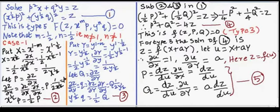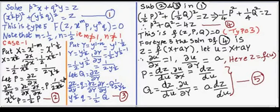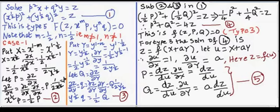The second problem is: solve p²√x + q²√y = z. Rearranging in the model f(z, x^m·p, y^n·q): we write it as (x^(1/2)·p)² + (y^(1/2)·q)² = z, which is equation number 1. The first term is of the type x^m·p and the second of type y^n·q, so this is of type 5: f(z, x^m·p, y^n·q) = 0.